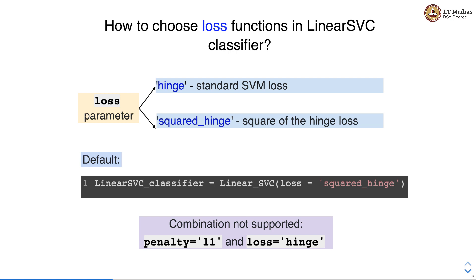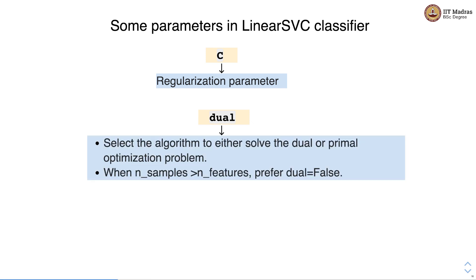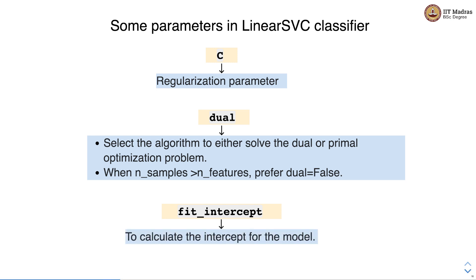Some key parameters in LinearSVC include C, the regularization parameter. There is also the dual parameter, which selects the algorithm to solve either a dual or primal optimization problem — when the number of samples is greater than the number of features, prefer the primal problem by setting dual to False. Another parameter is fit_intercept, which instructs the model to calculate the intercept.